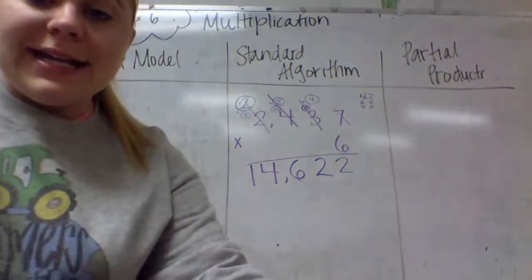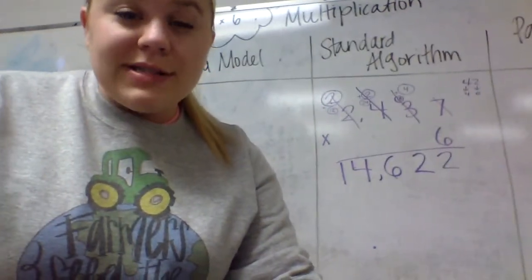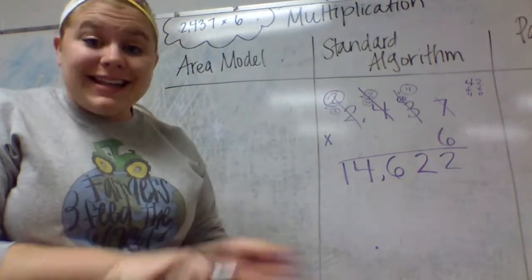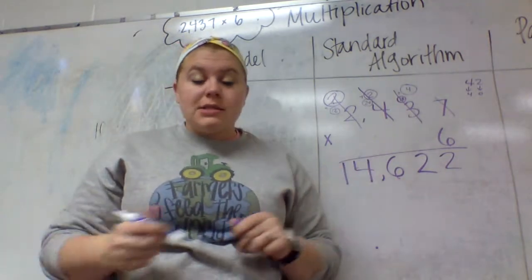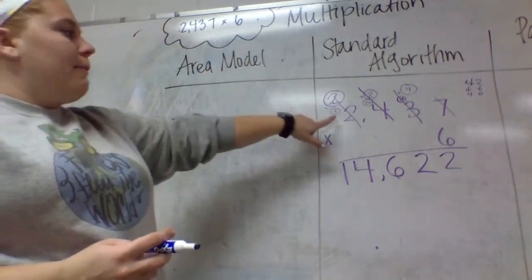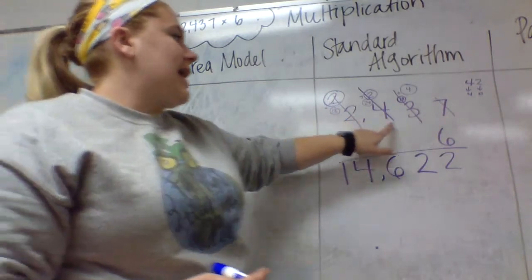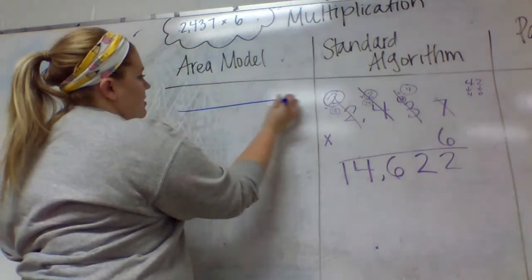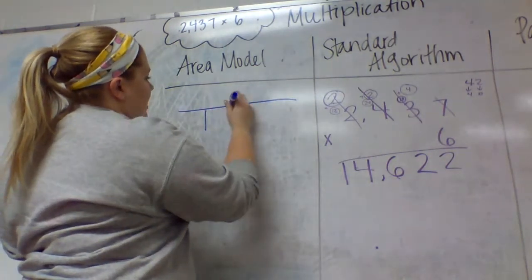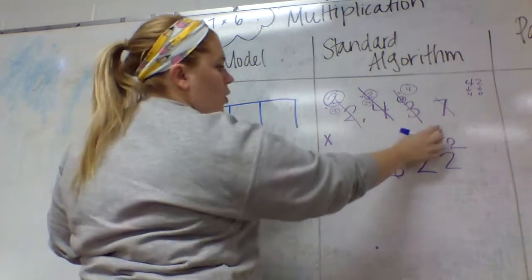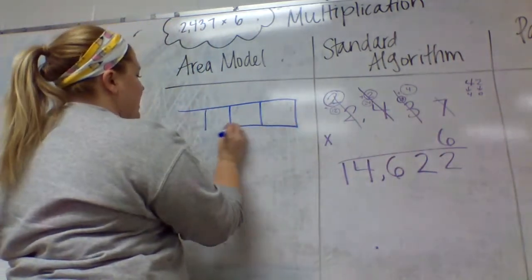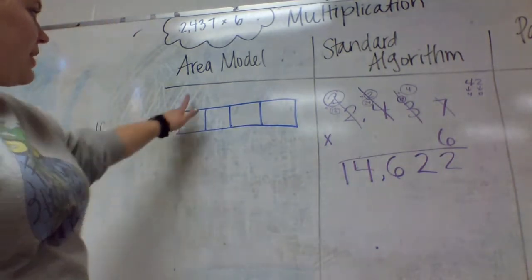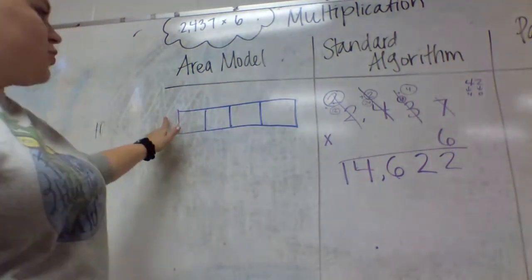Now, if I want to look at it, area model, and area model is how a lot of people prefer to do it. The hardest part about area model is getting it set up. Once you've got it set up, it's not too bad. So I'm going to look. My number with more digits, it has how many digits? It's got four. So when I draw my box, I know I need to have four spots. It's four times one. That means I need a four by one box because four digits times one digit.